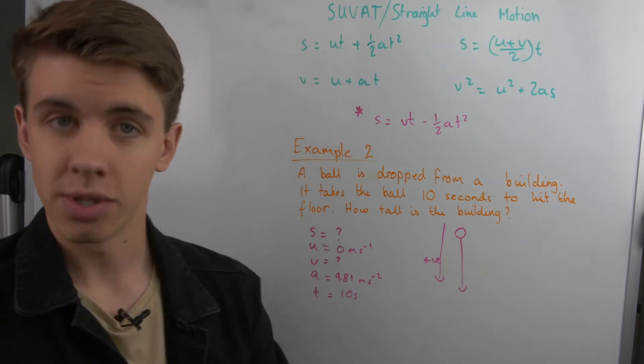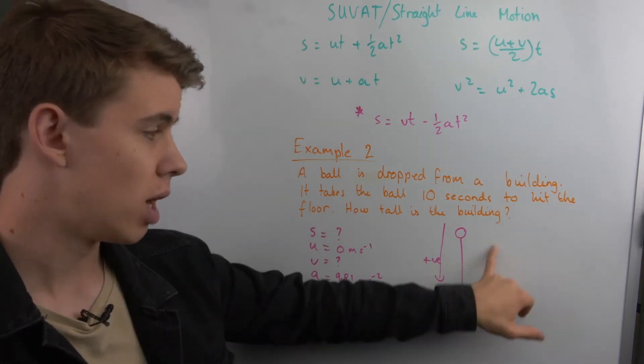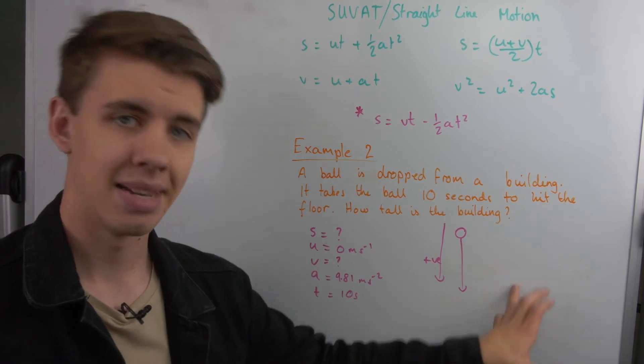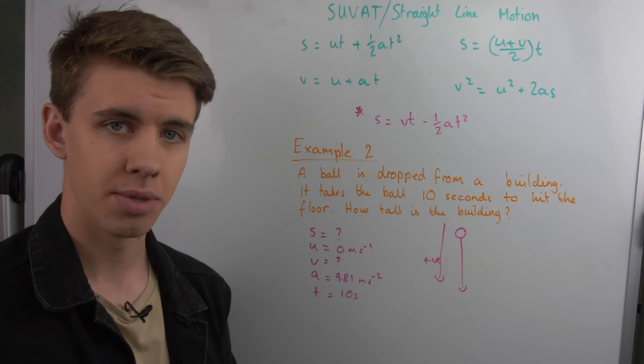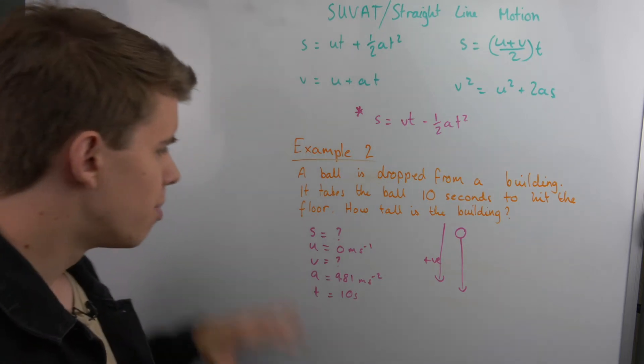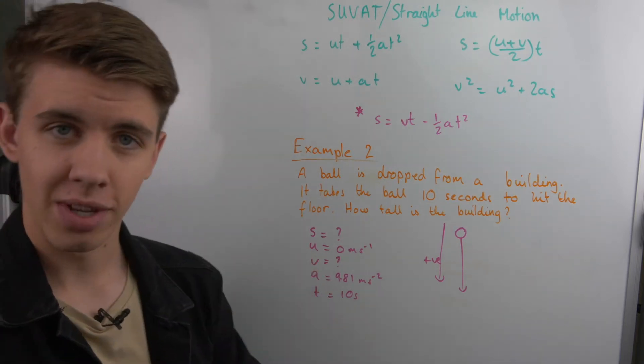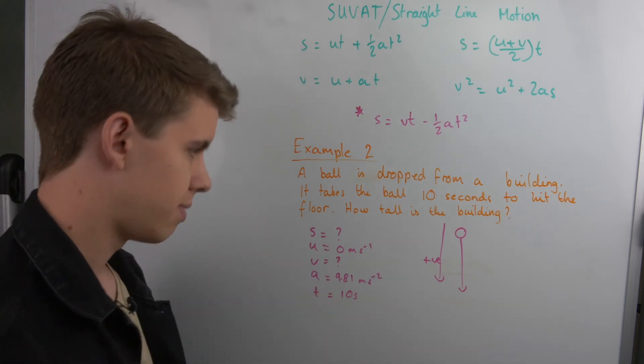If there was a follow-on to this question, where the ball would hit the floor and then would travel upwards, that would then be a negative displacement because it's traveling against the direction that I've already set out to be positive. But for this one, nothing is traveling in the opposite direction, so we can keep the positive values for all of them.